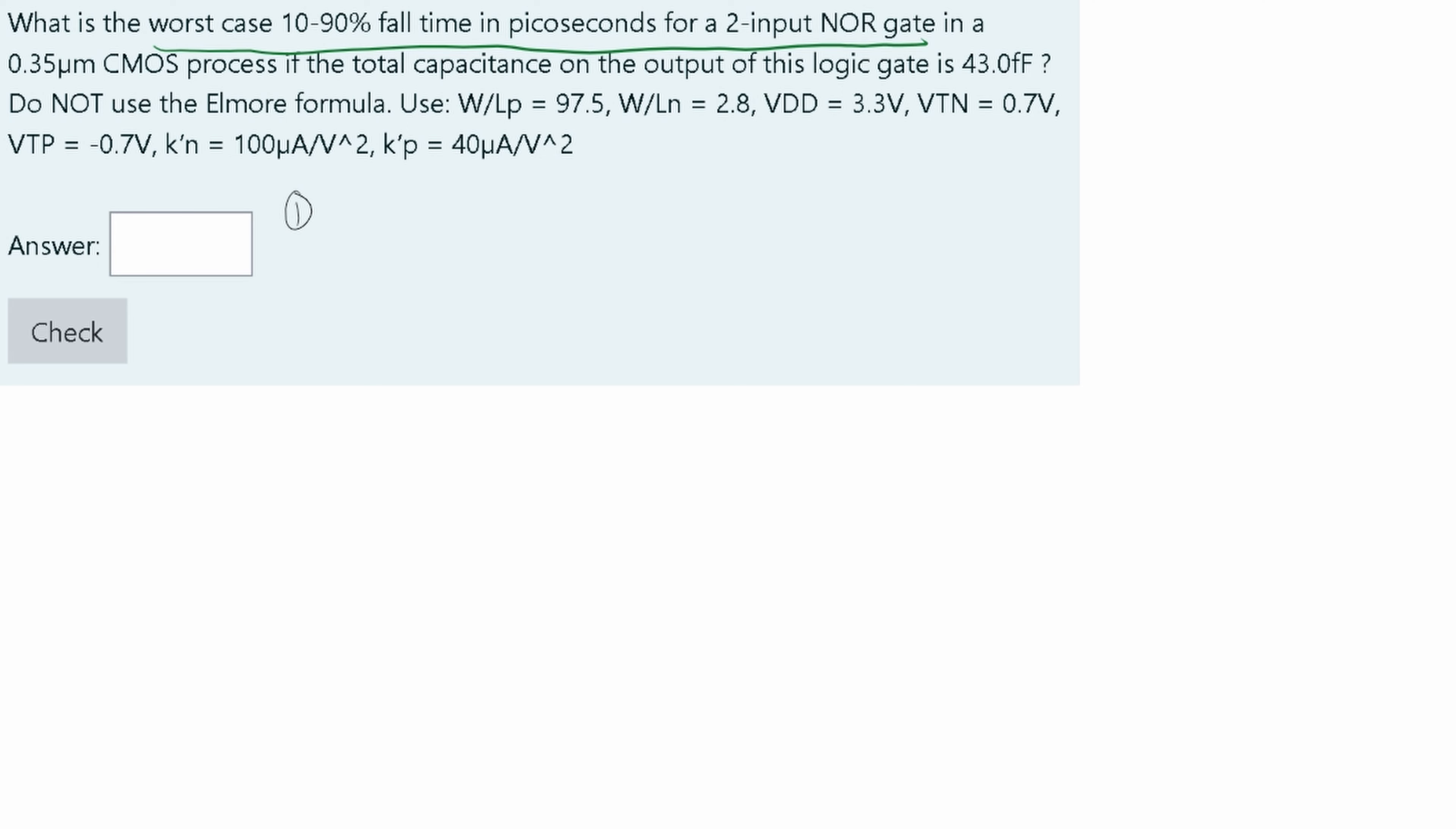Step one is we want to find the difference in percentage. The way we're going to do this is with LN. We're going to have 100 minus the lower percentage divided by 100 minus the higher percentage. For my problem specifically, this is LN of 100 minus 10 over 100 minus 90, which gives me approximately 2.2.